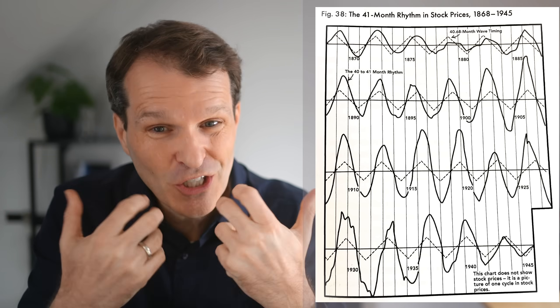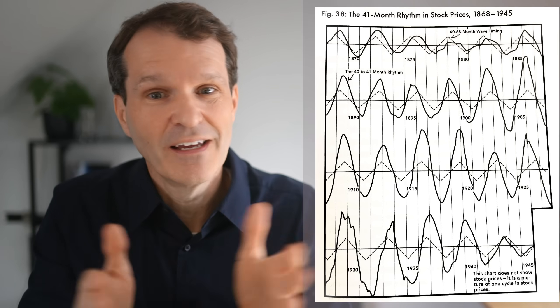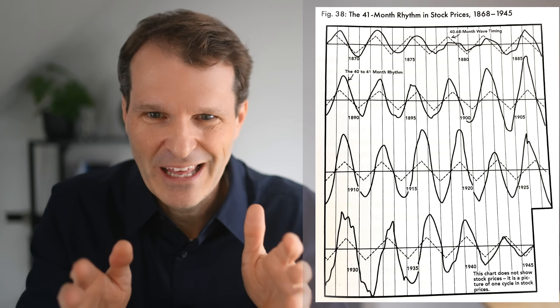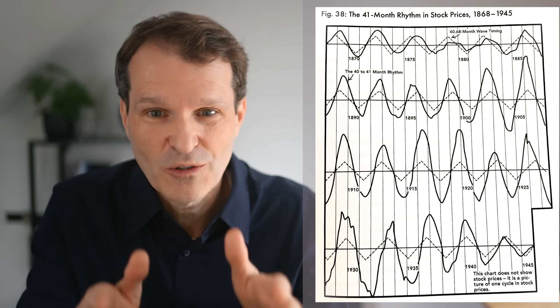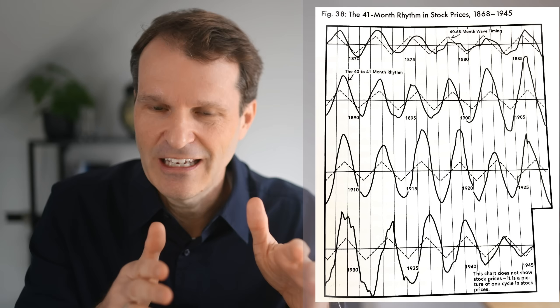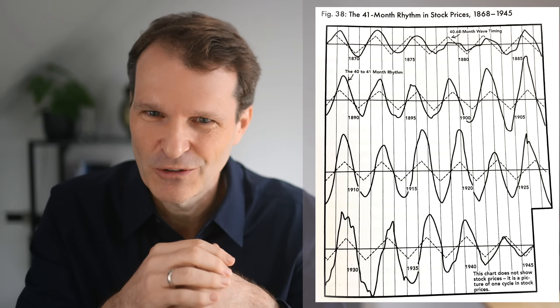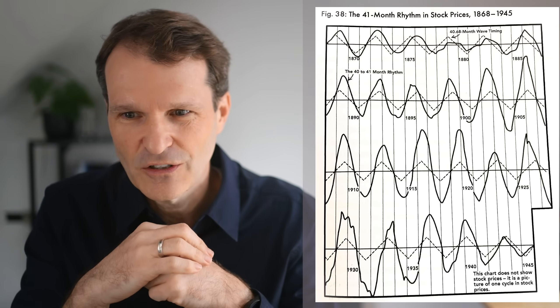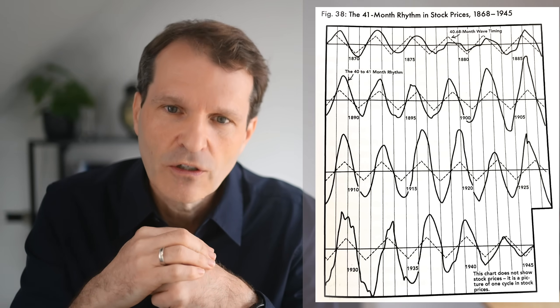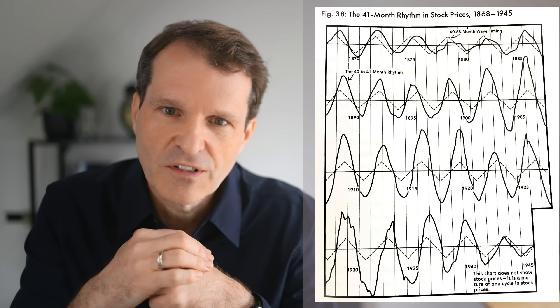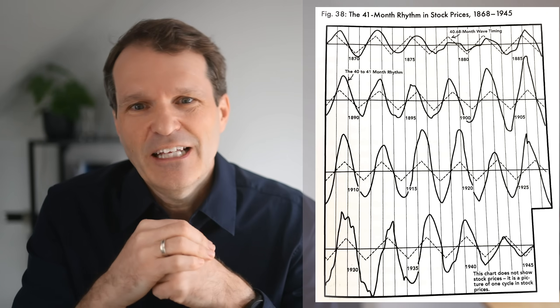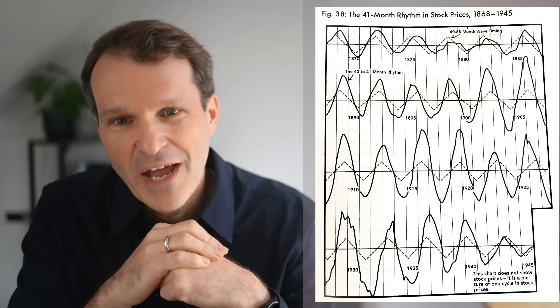He did this research going back into the 1870s up to 1945. The book was published in 1970 as the first original release. By reading that chapter, he shows there is a 41-month cycle in stock prices by analyzing the U.S. main indices. By the way, no digital signal processing, no computers available at that point in time. This was manual research.